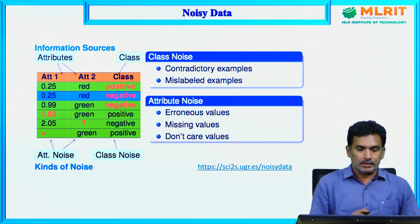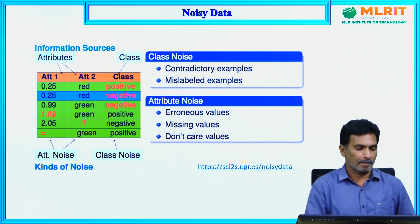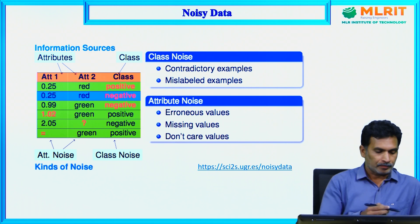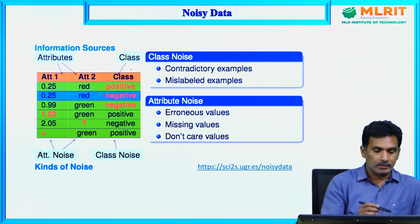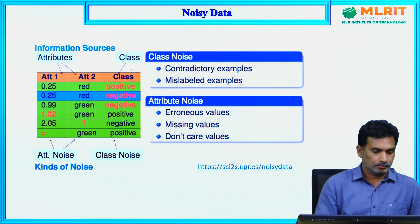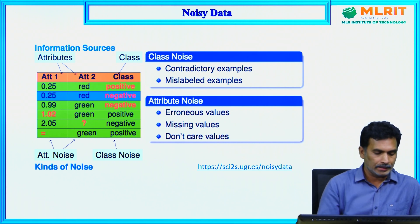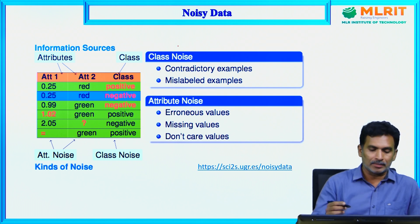Noise could occur either in terms of class noise or attribute noise. If you take this example data, we have attribute 1, attribute 2, and the corresponding class label. In attribute 1 we have some values, and in attribute 2 we have colors like red and green, along with the class labels. Noise could occur at the class label level, and there are two types of class noise.